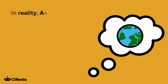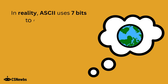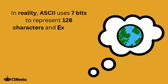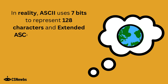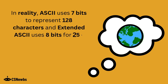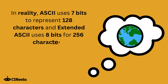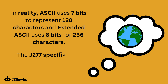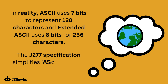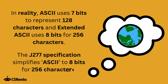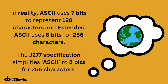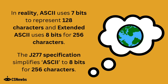It is important to know that in reality, ASCII actually uses 7 bits to represent 128 characters, and a version of ASCII called Extended ASCII uses 8 bits for 256 characters. However, the OCR GCSE J277 specification simplifies ASCII to meaning 8 bits for 256 characters, which is what will be expected in the exam.